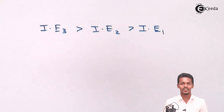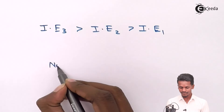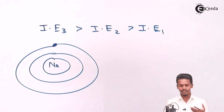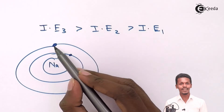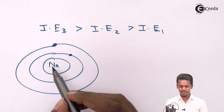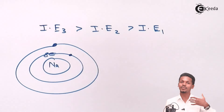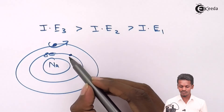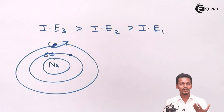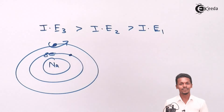For example, take sodium. Sodium has one outermost electron, and it is relatively easy to remove — this corresponds to the first ionization enthalpy. But the second electron is present in the inner second shell along with eight electrons. After the first electron is removed, the nuclear charge becomes more effective and the distance is reduced, making it very difficult to remove the second electron. Hence, the second ionization enthalpy of sodium is much greater than the first.